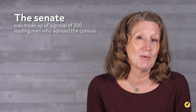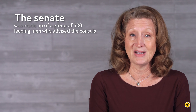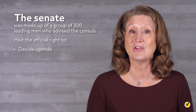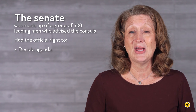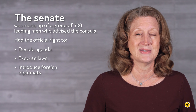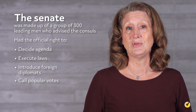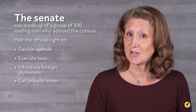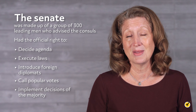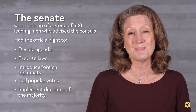The Senate was made up of a group of 300 leading men who advised the Consuls. The Consuls had the official right to decide the agenda for debate in the Senate, execute its laws, and introduce foreign diplomats into its presence. They also had the duty to call popular votes when required to approve certain measures and to implement the decisions of the majority. The Praetors, who had become their own group separate from the Consuls, took over some of the Consuls' judicial functions.